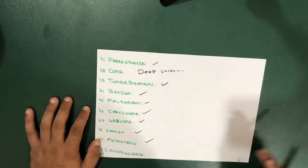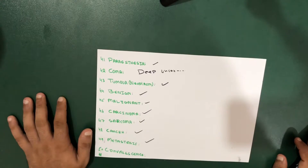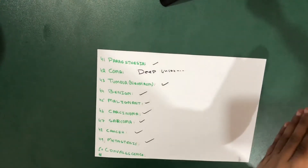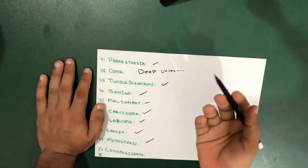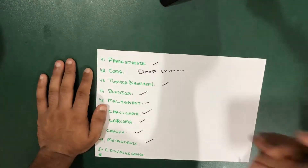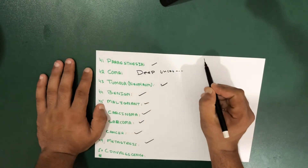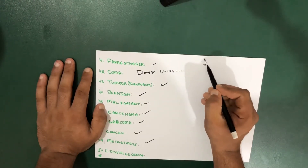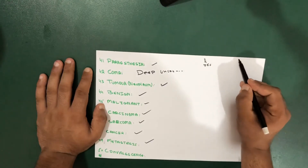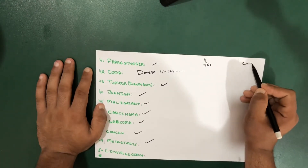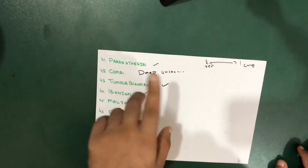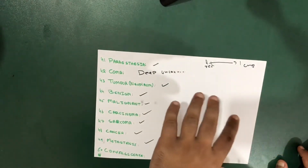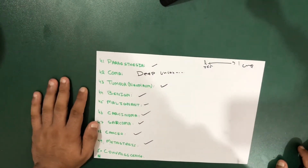Now I'll talk about the last definition, which is convalescence. Convalescence is the recovery period between the end of a disease and restoration to complete health. For example, you have a disease and are suffering from signs like fever. The time period between the day you recover and the day you regain complete health is called convalescence.